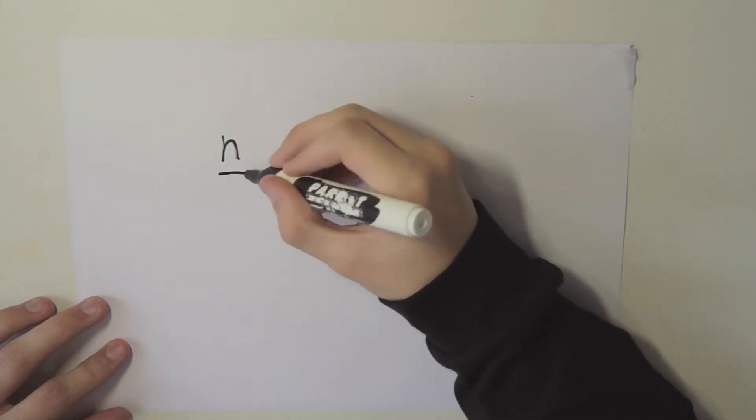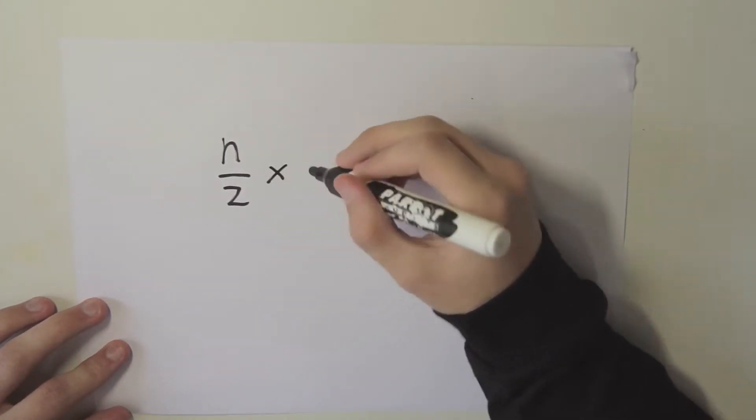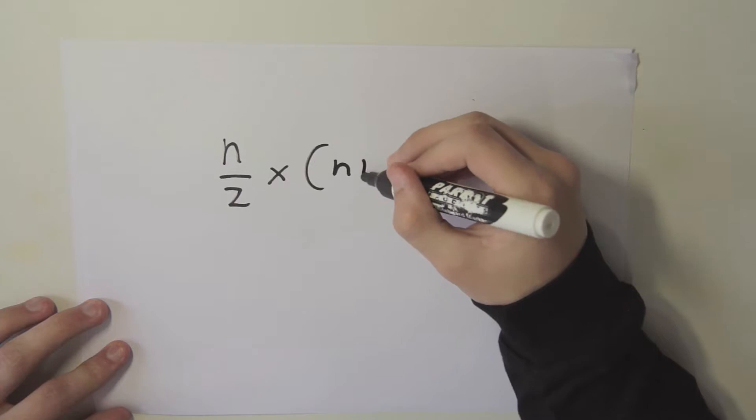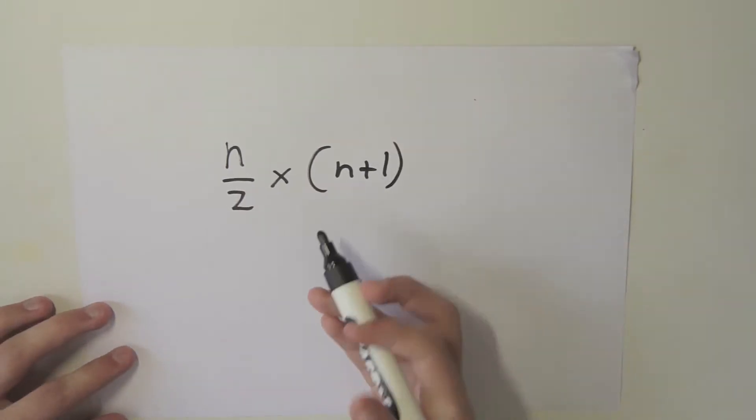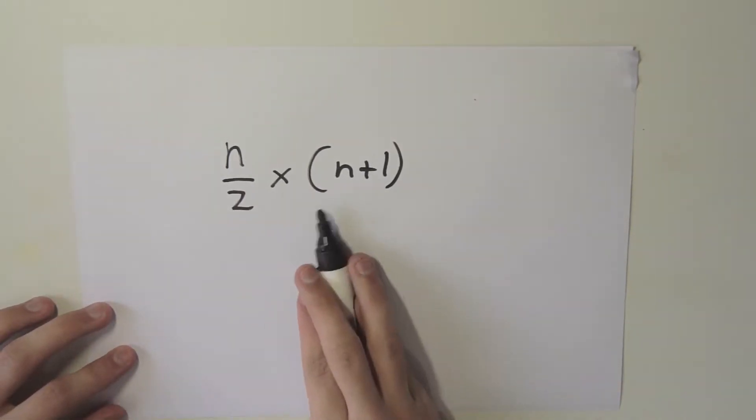We are going to figure out what is the meaning behind n over 2 multiplied by n plus 1. Now for those who do not know what this means, this is the sum of all consecutive natural numbers up to n.